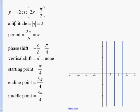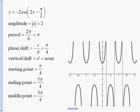Since our problem had a negative, in between the first two asymptotes we're at a minimum point, so we're at negative 2. Then halfway between the second and third asymptotes we're at a maximum point. Then we draw our cosecant curve.